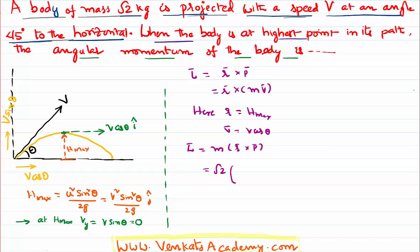r is nothing but H maximum, that is V square sin square theta by 2g, j along j cap, cross m v bar. But m you have already written outside, it's nothing but V.